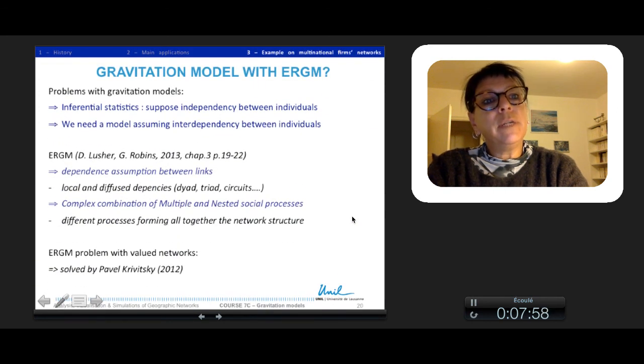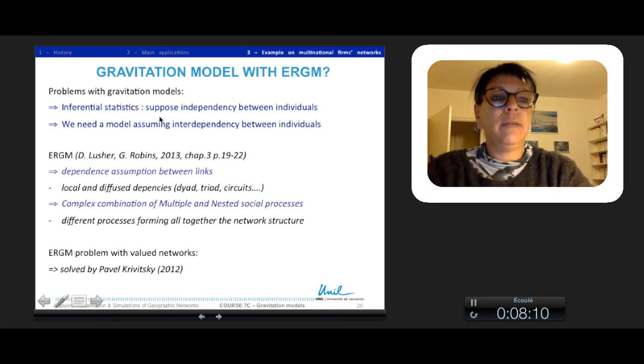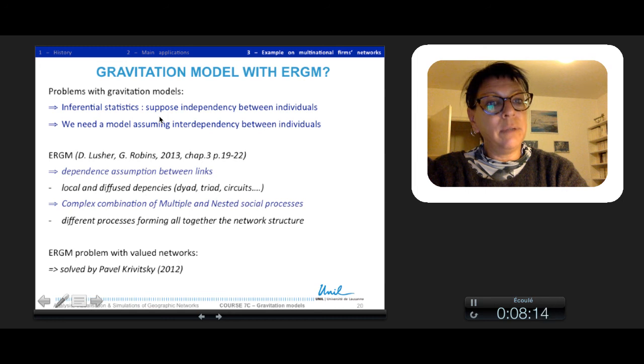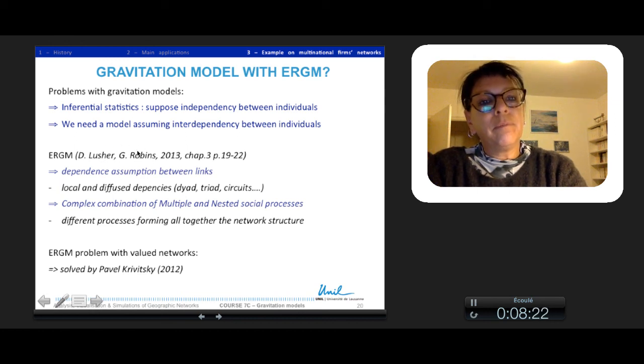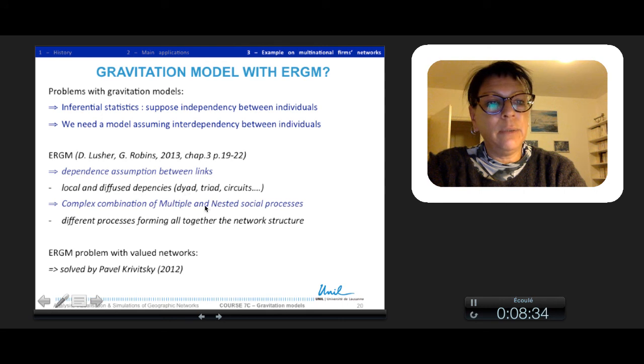So in conclusion to this model, you have the paper available on the Moodle platform. We have the problem with gravitation model that inferential statistics suppose independence between individuals, and we need a model assuming interdependency between individuals. The good application would be the ERGM because there is the dependence assumption between links, and we could try local and diffuse dependencies as triadic circuits and more complex combinations of multiple and nested social processes. But the problem of ERGM is with valued networks, which is solved partly but not totally. So for the moment, most of the authors continue to use the gravitation model with inferential statistics.